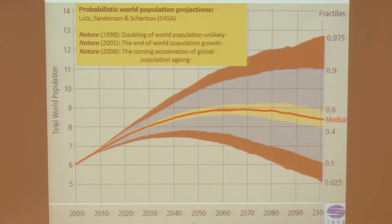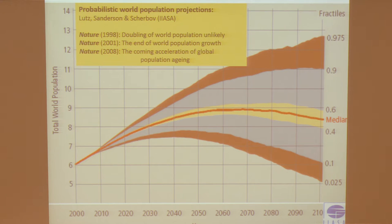Then in 2001 there's a very frequently cited paper: 'the end of world population growth.' We said there's a high chance that over the course of the 21st century, world population will peak and start to slightly decline, as you see in this graph. The red line is the median, where half of the simulated cases are above and below, but there's a big uncertainty range. A 2008 paper focused on what is now dominating discussion in many low-fertility countries — the coming acceleration of global population aging.